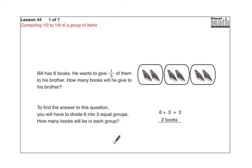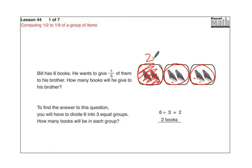Bill has 6 books. He wants to give 1 third of them to his brother. How many books will he give to his brother? Well, here's a drawing of it. Here are the 6 books, and if we split these books into thirds, that means it has to be 3 pieces. There are my 3 pieces, and in each piece I have 2 books. So if he gives 1 third to his brother, he's going to give 2 books.